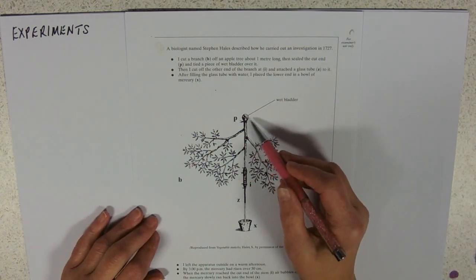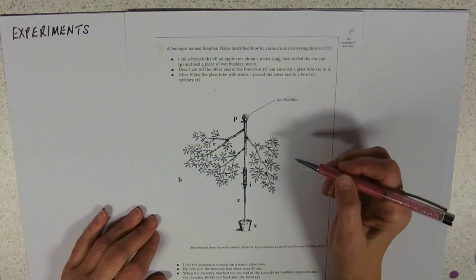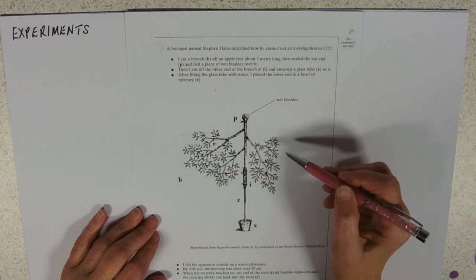So, sealing the end would mean that no water would escape and a wet bladder just ensures that doesn't happen. Notice that his tree branches upside down, as it were.